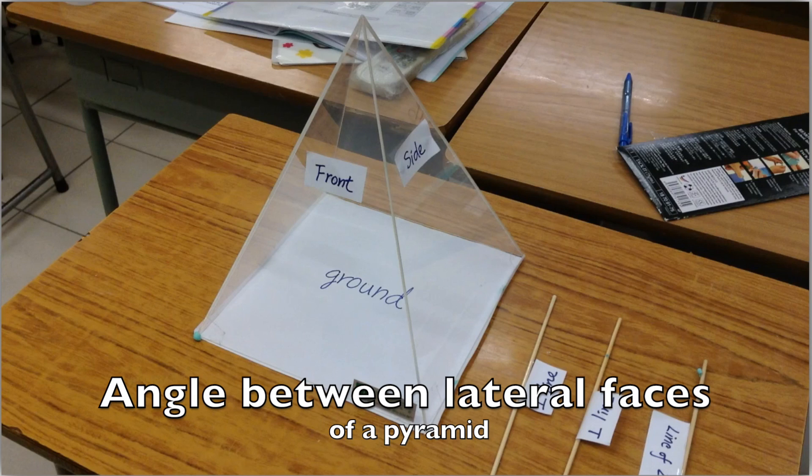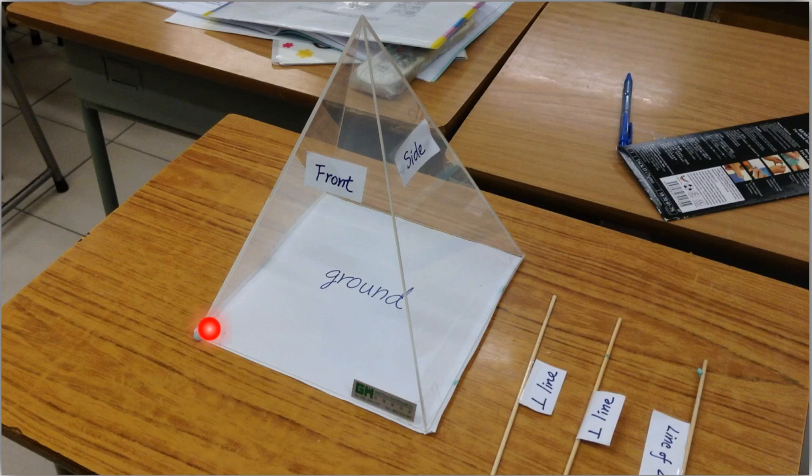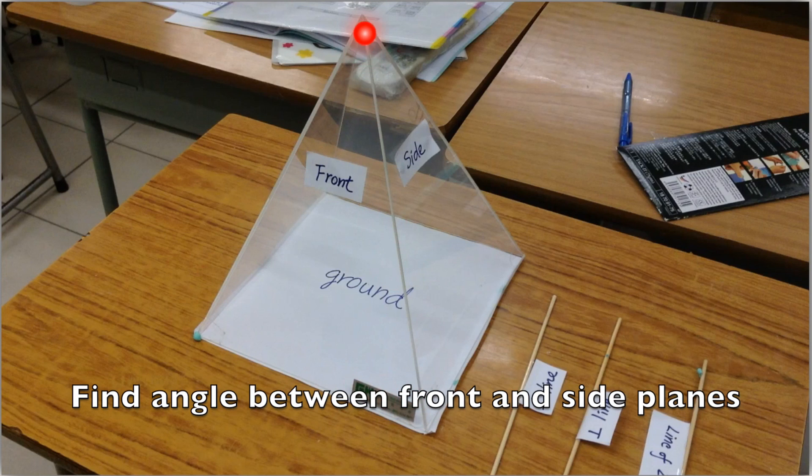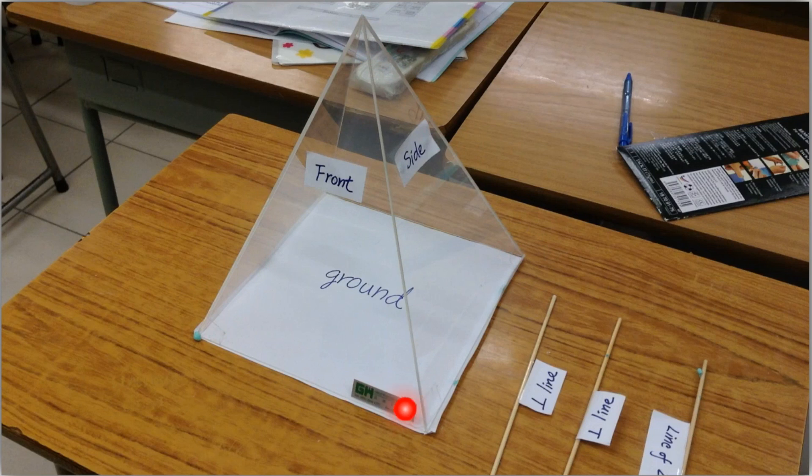And next, we are going to find the angle between the lateral faces of a pyramid. For example, in this case, it is this front plane and this side plane. We have to find the angle between these two planes.